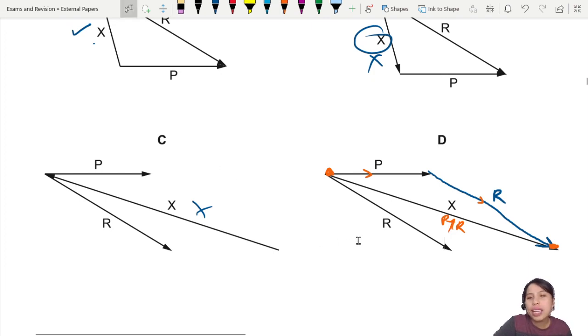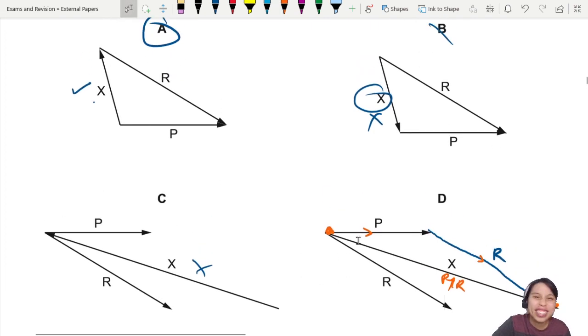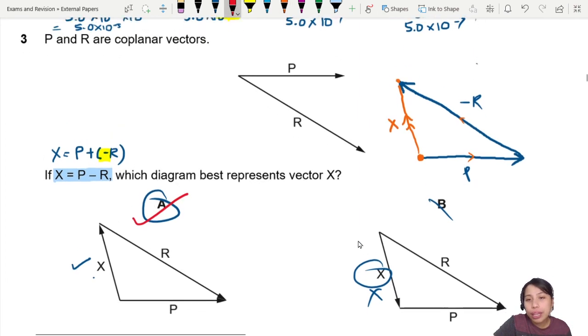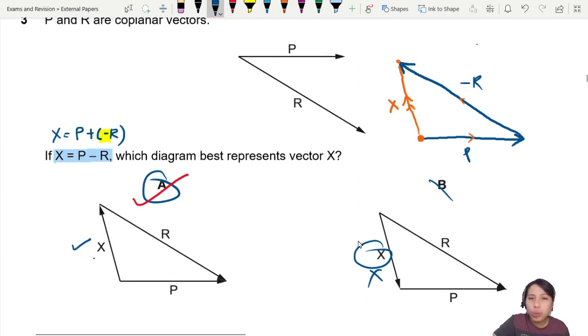So yeah, all these by just looking at their length, not going to be correct. A is the best choice. So remember, in exam, you can move around rulers, I mean, you can draw, redraw a few diagrams and see what is the best way to represent this vector x, which is known as the resultant vector. So that's all for this video. I will see you in the next question.